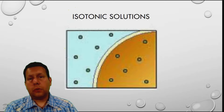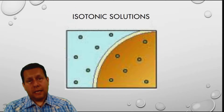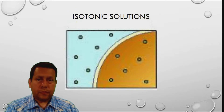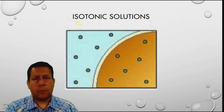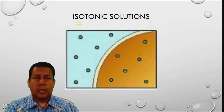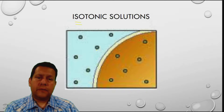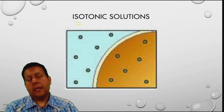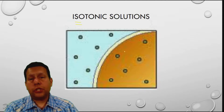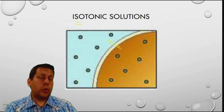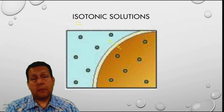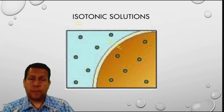The last one is called an isotonic solution, and I think this is the easiest one. An isotonic solution just means that the inside and the outside are both equal. You have six particles on the outside and six particles on the inside. There's going to be no net change — you might get a water molecule moving in, but then you're also going to have one moving out. There's no net change in size; the cell doesn't get any bigger or any smaller.